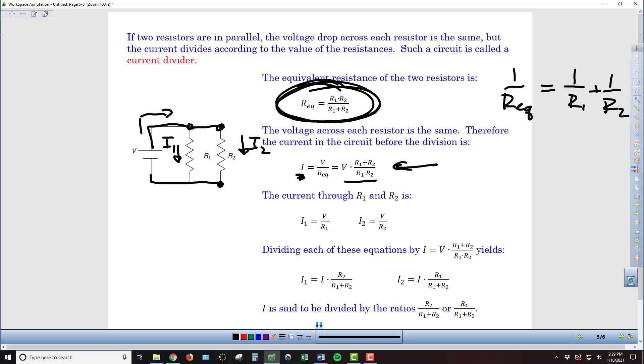And so the current through resistor 1 and resistor 2 are I1 is equal to V over R1. I2 is equal to V over R2. Since again, the voltage drop is the same as what's being provided by the battery, it's just that the current is going to depend on what the value of those resistances are.